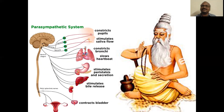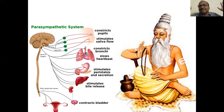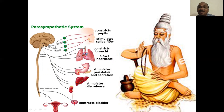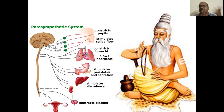Parasympathetic system. What you saw was sympathetic system; this is parasympathetic. Pleasant state — P stands for pleasant. Parasympathetic P means pleasant state. When you are doing meditation, your body is in a parasympathetic system. That is a good system. Parasympathetic is good. It constricts the pupils — opposite of the sympathetic system. Your pupils will not be dilated; pupils will be constricted. It stimulates the saliva flow. It constricts the bronchi. Opposite to sympathetic.